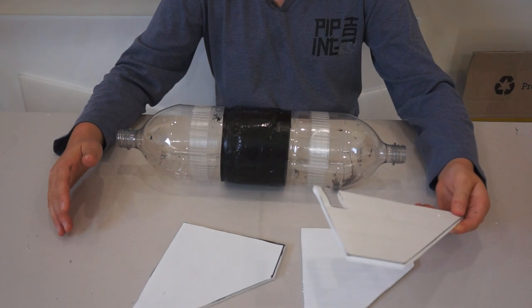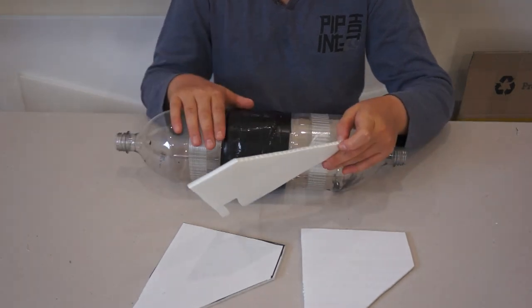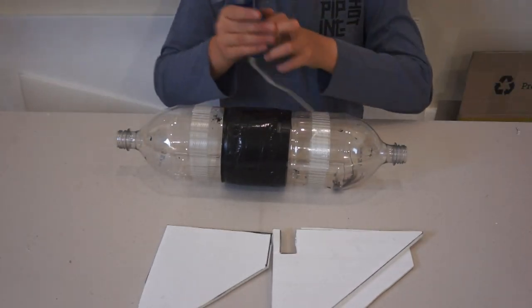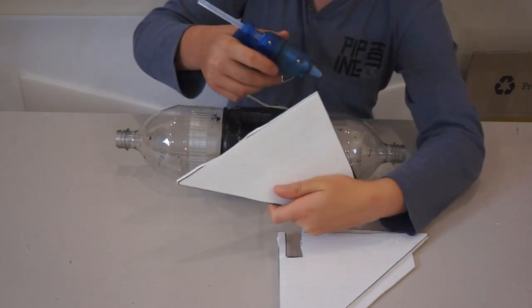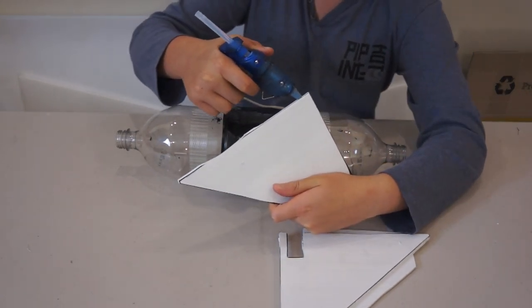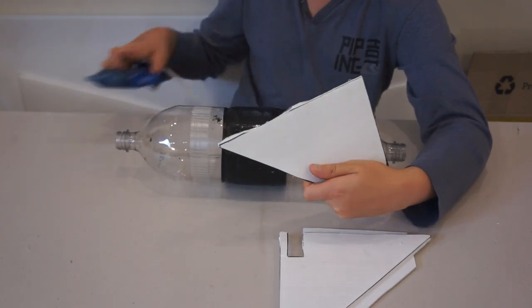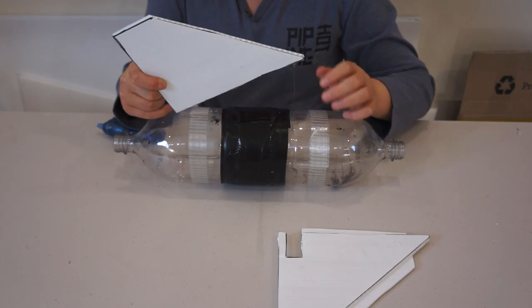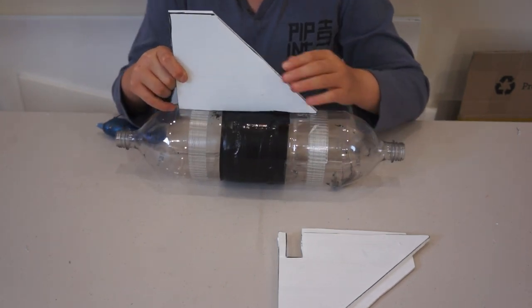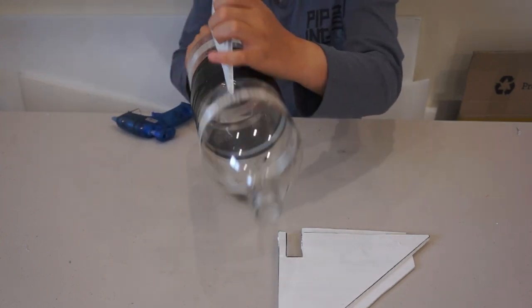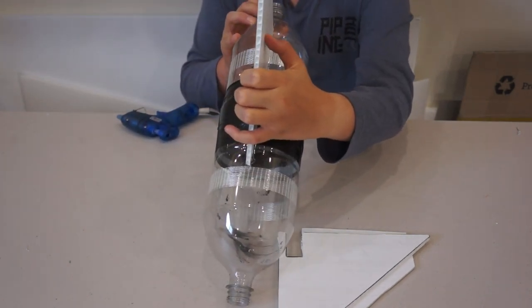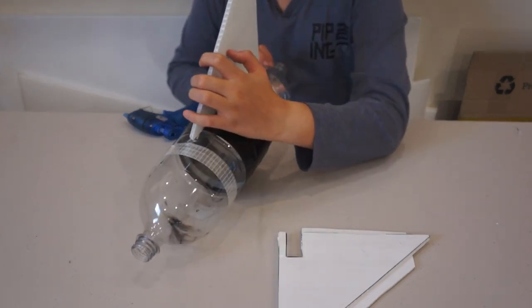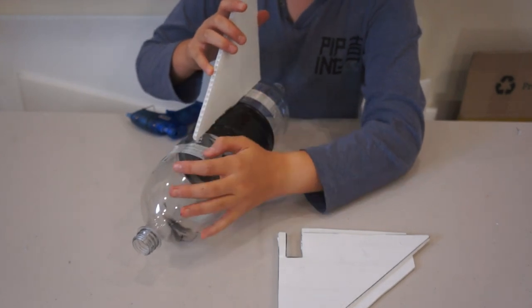Now I'm going to glue the fins under the main rocket. So what I like to do is first just get some hot glue and apply it onto the fin, just like that. And then I just stick it on and press down. And then I look through the bottle to make sure that the fin is lined up evenly and straight. And then just wait till the glue dries.